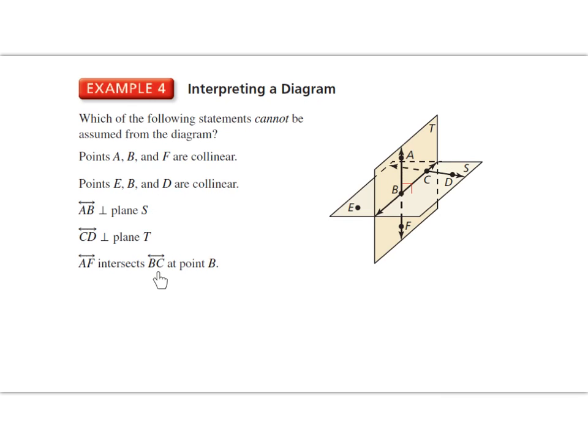Let's take a look at line AF intersecting line BC at point B. So line AF, line BC, and intersecting at point B. That is true.